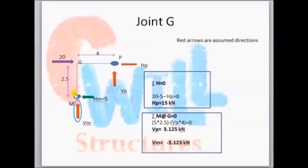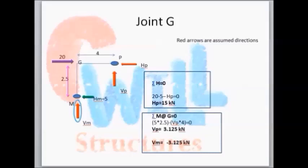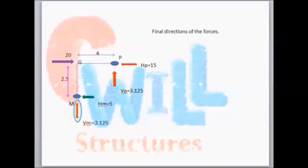The same notation applies for joint M. Initially we assume force directions, but we keep the correct direction for already-calculated forces such as H of M, which is the column shear — already calculated and shown in green, with a value of 5 kN. Taking a moment at joint G, if we get a negative value the assumed direction is wrong. Here Vm comes out negative, meaning the assumed upward direction is wrong; the actual direction is downward, so we correct it.